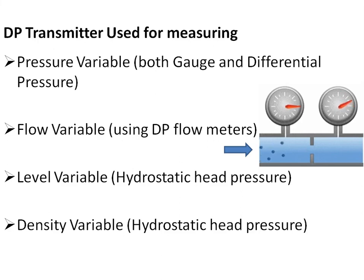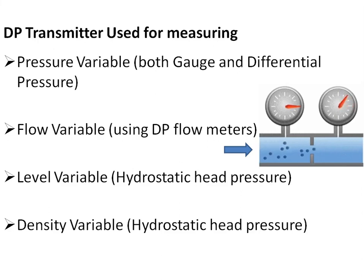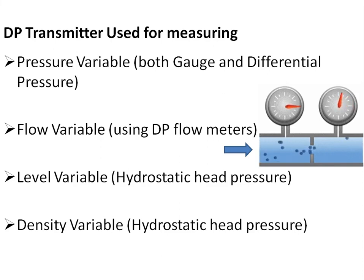In a DP flow meter, the primary sensing element may be an orifice, venturi, nozzle, elbow, or pitot tube. These primary sensing elements are inserted into the flowing fluid pipeline.